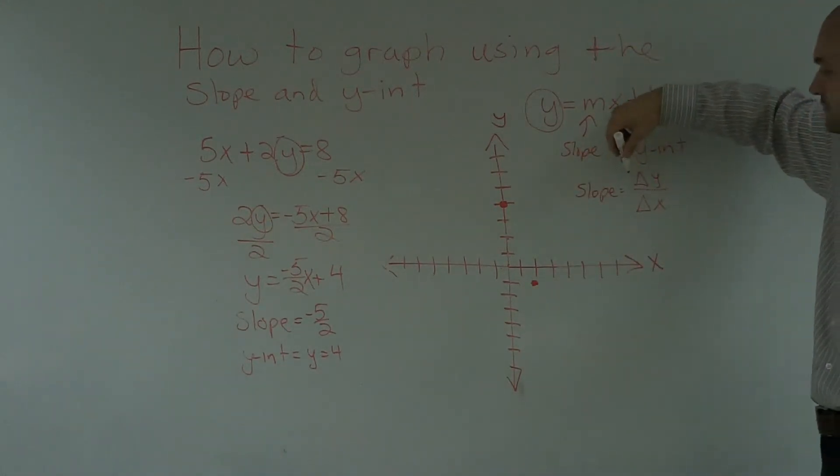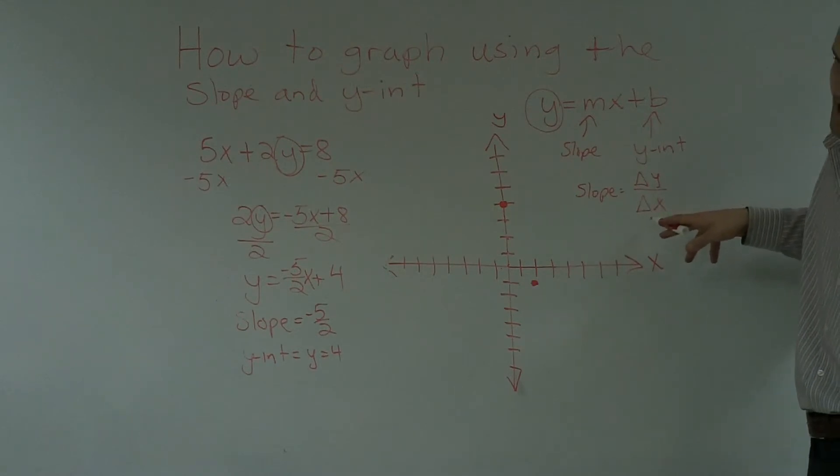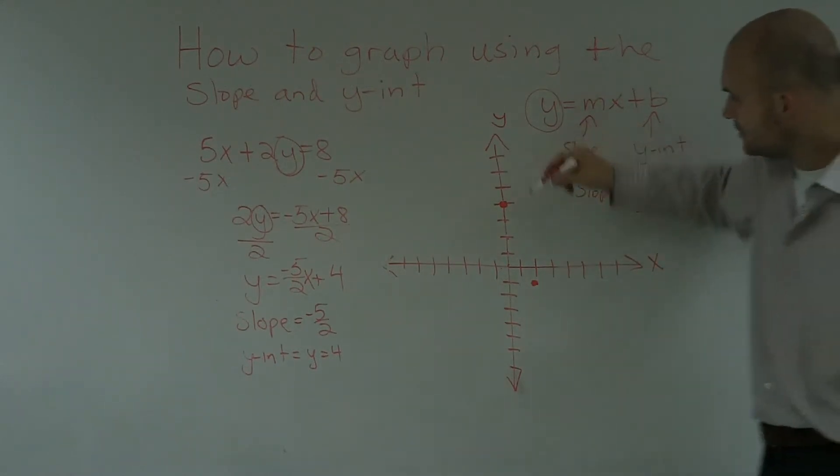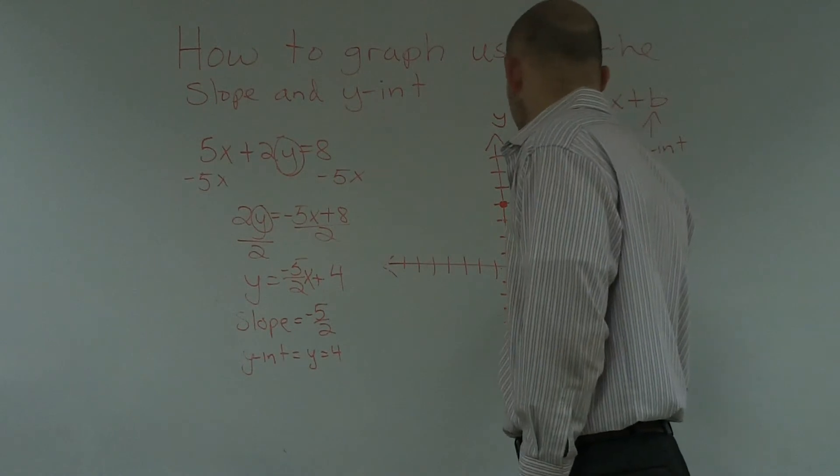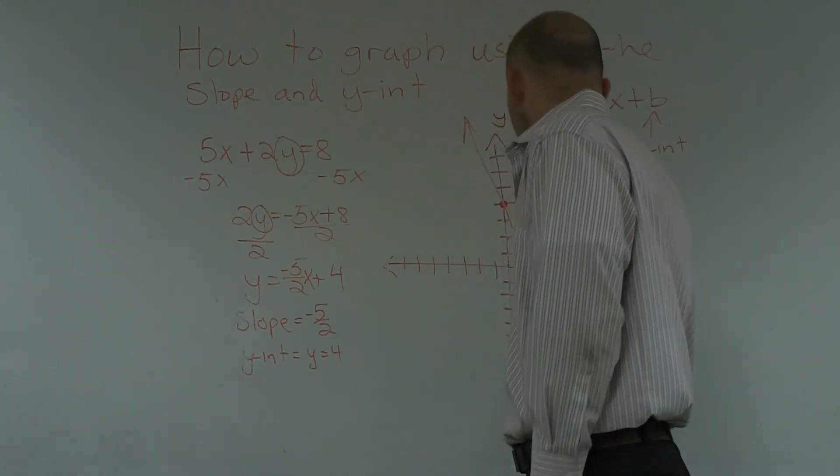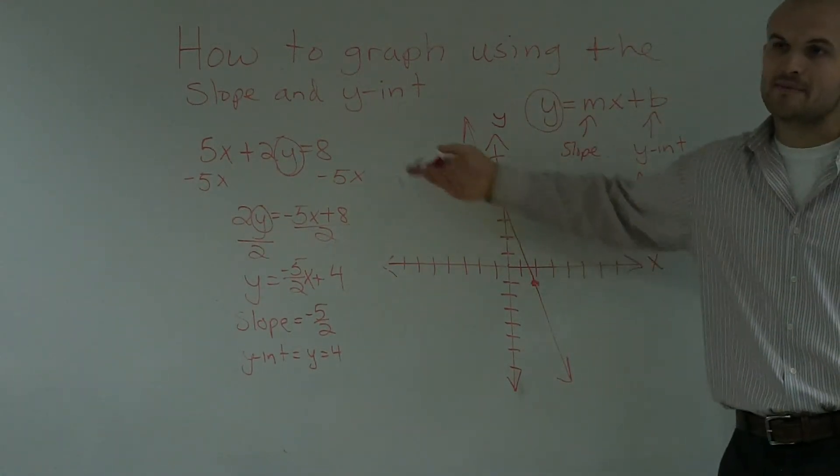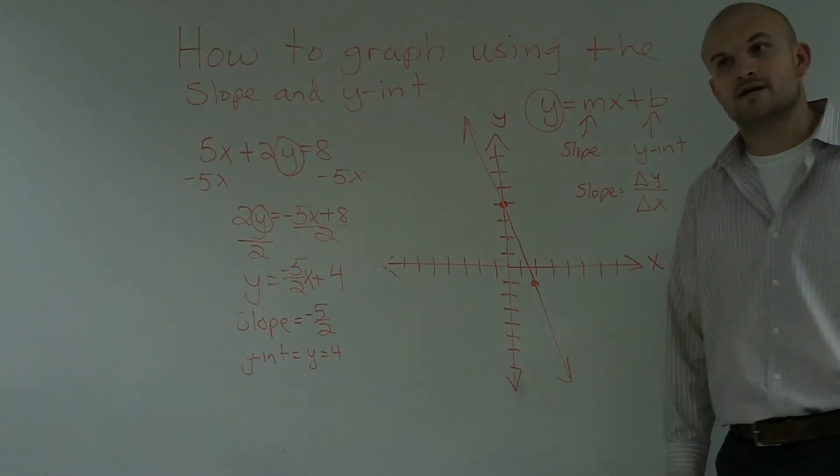Remember, when the change in y is negative, that means you're going down. Or you can also make the change of x negative, which would basically be going to the left. Either way, what you guys can see is this graph is exactly the same as the one I previously did with the x and y intercepts.